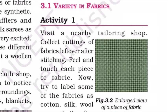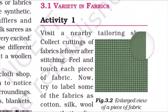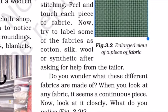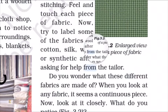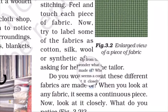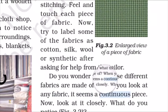Can you also identify some fabrics? Activity One: Visit a nearby tailoring shop and collect cuttings of fabrics left over after stitching. Feel and touch each piece of fabric. Now try to label some of the fabrics as cotton, silk, wool, or synthetic after asking for help from the tailor. Do you wonder what these different fabrics are made of? When you look at any fabric, it seems like a continuous piece.